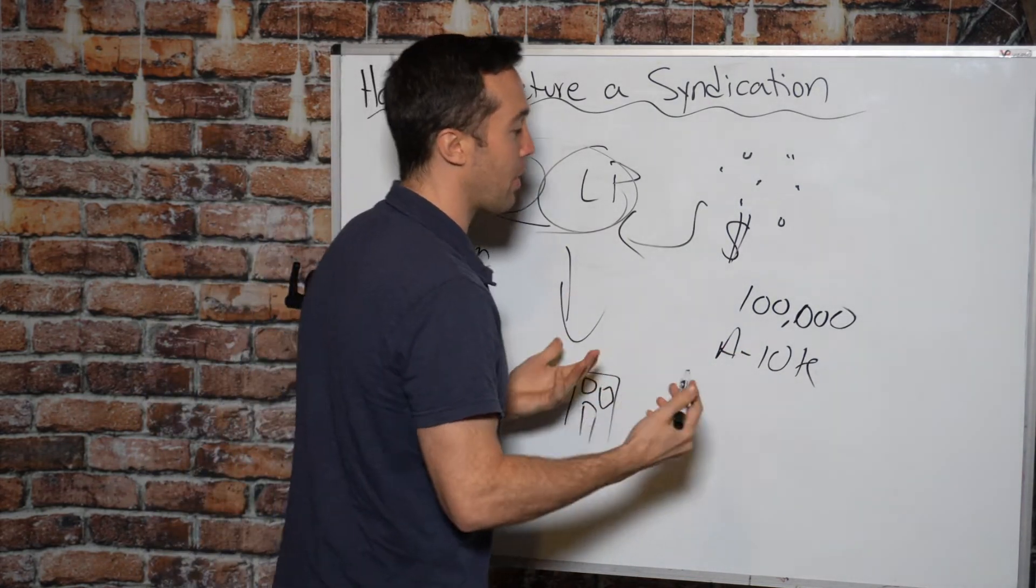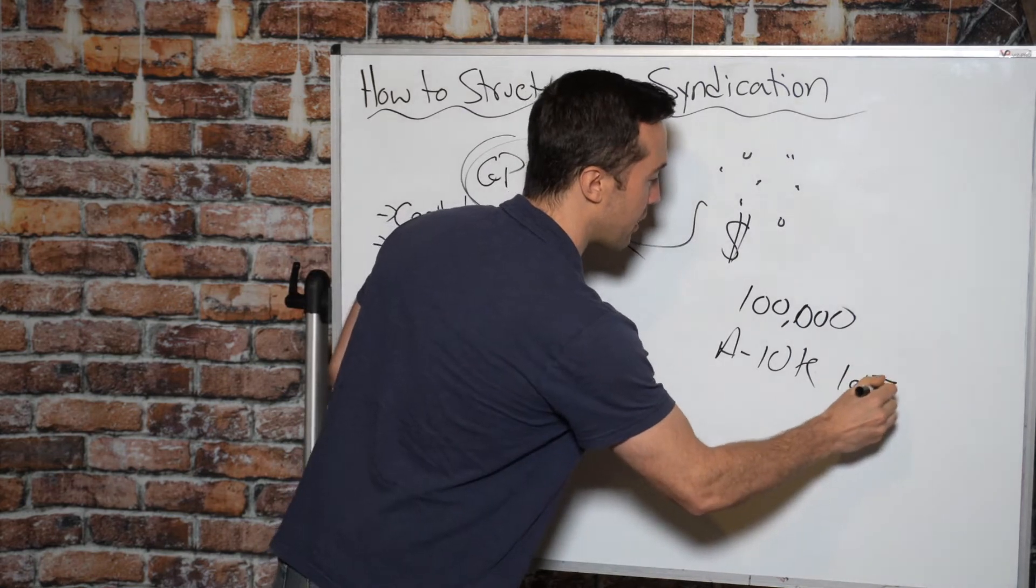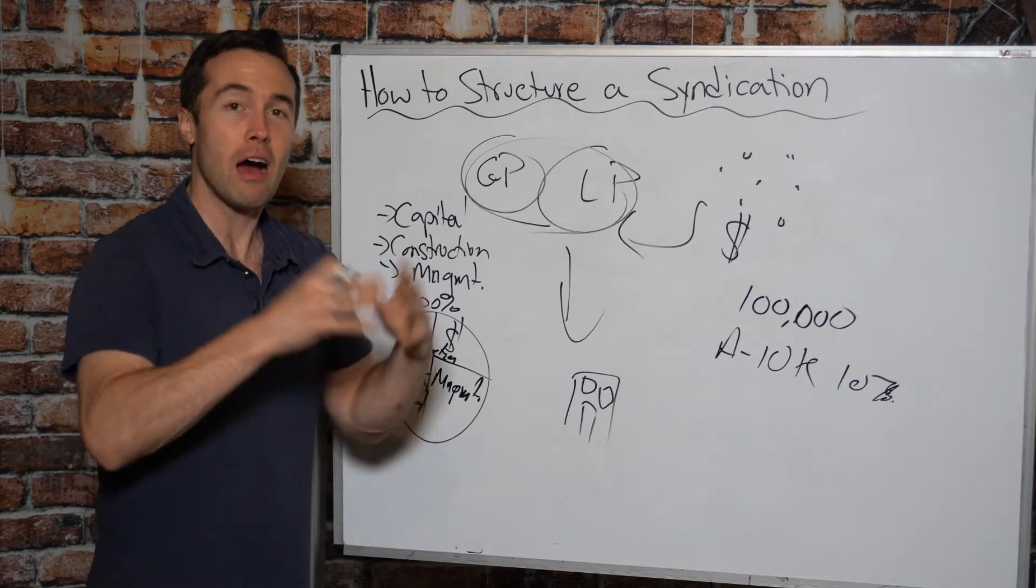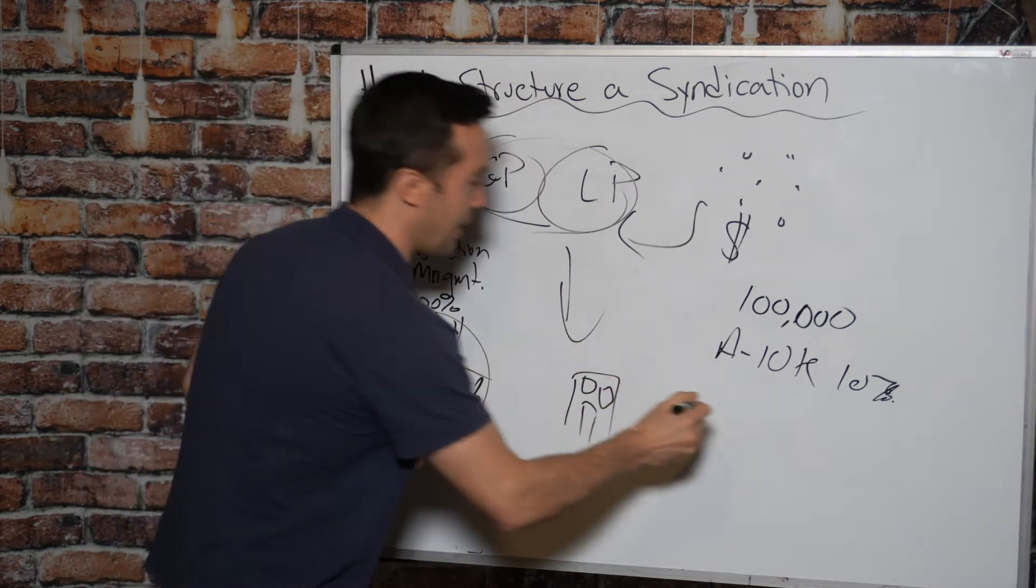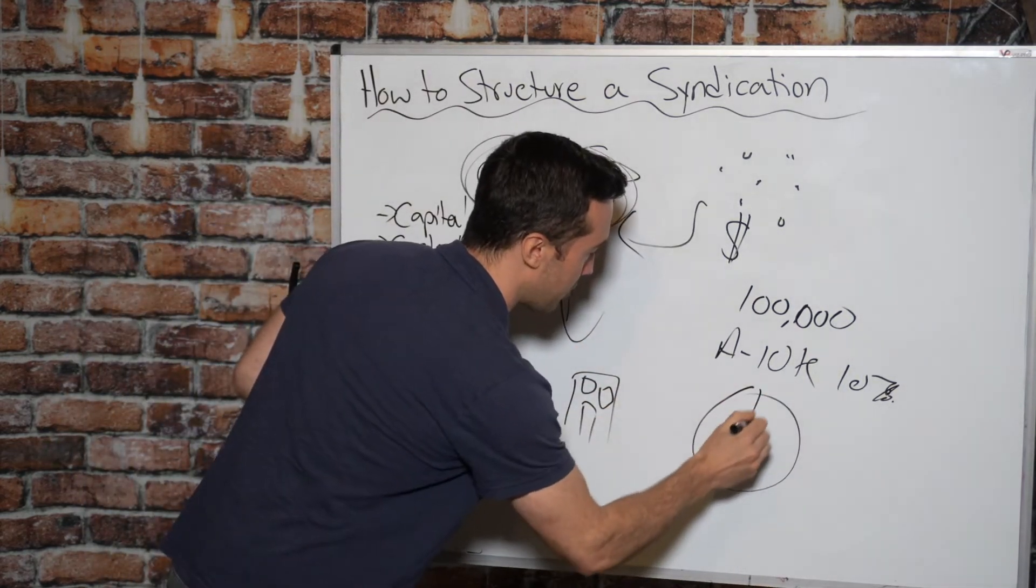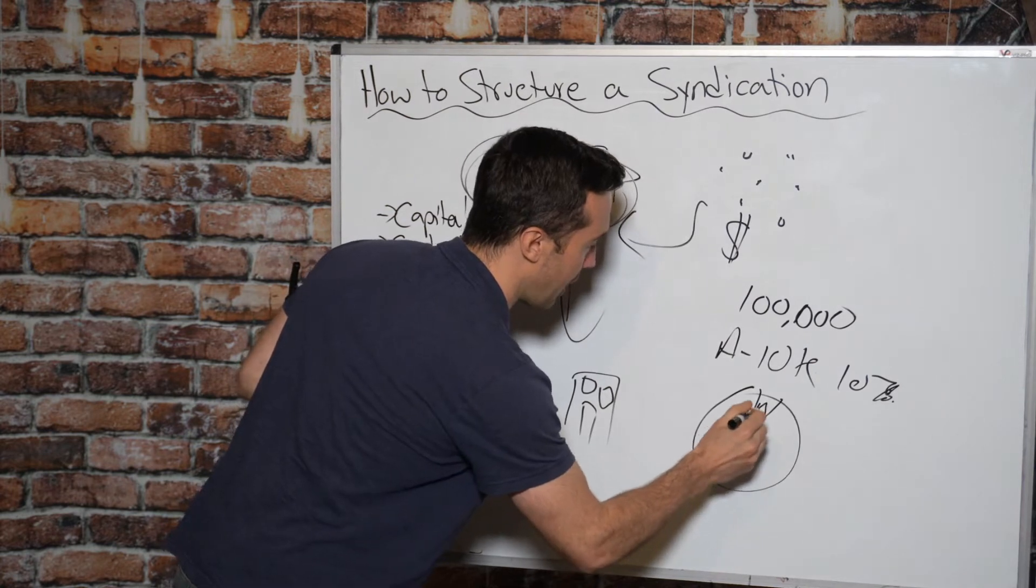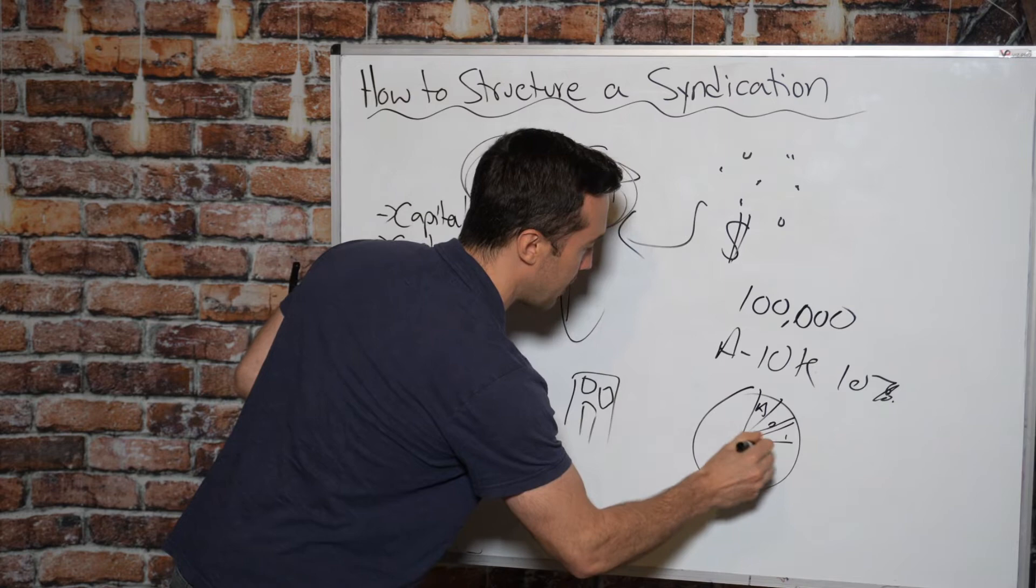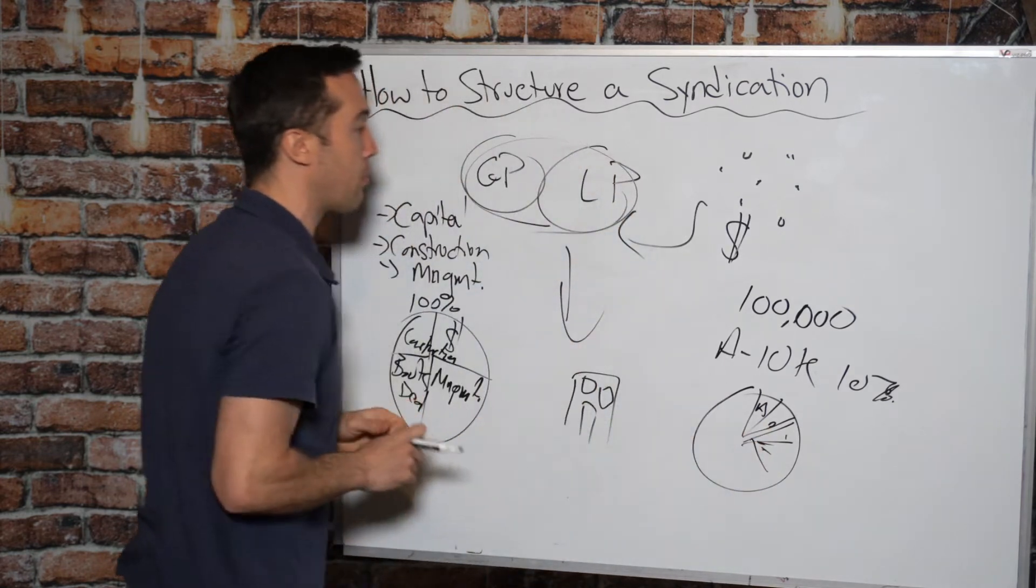Well, investor A would actually have 10% of the shares of the limited partnership because they're bringing 10% of the capital required for the limited partnership. So we'll draw the chart here. So you'll have like 10% here for investor A and then B, everybody else will have their own chunks depending on proportionate to the amount of capital they are bringing.